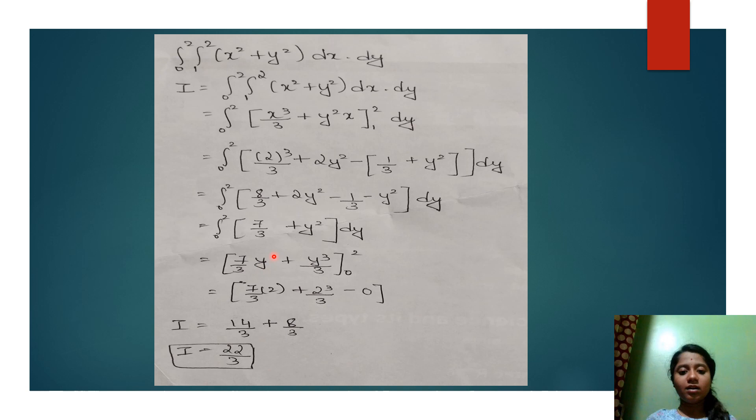Integral of dy is y plus y square integrating with respect to dy gives y cube by 3. Then the limits 0 and 2 are shifted to the right hand side.